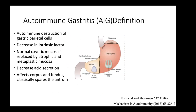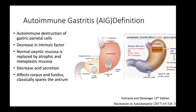So what is the definition? Autoimmune gastritis involves autoimmune destruction of gastric parietal cells, causing a decrease in intrinsic factor, which is vital for the absorption of vitamin B12. The normal oxyntic mucosa, which makes the acid in the body of the stomach, is replaced by atrophic and metaplastic mucosa — and that carries a risk for progressing to malignancy. There is also a decrease in acid secretion. Classically, it affects the body and fundus of the stomach, sparing the antrum, which is always involved in H. pylori infection.